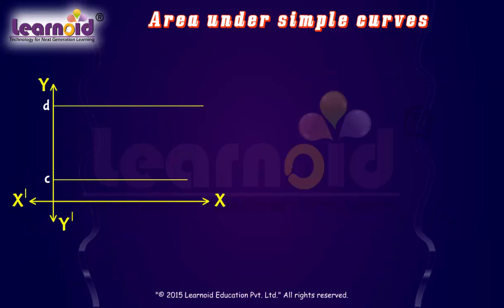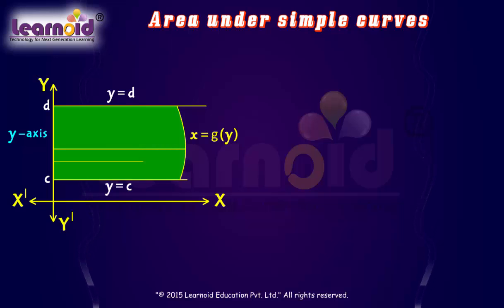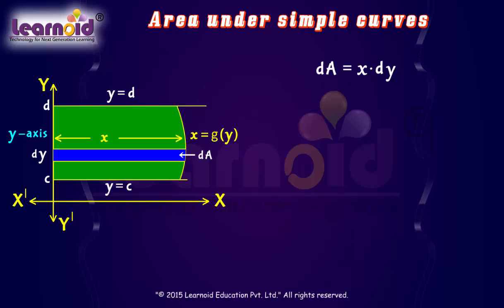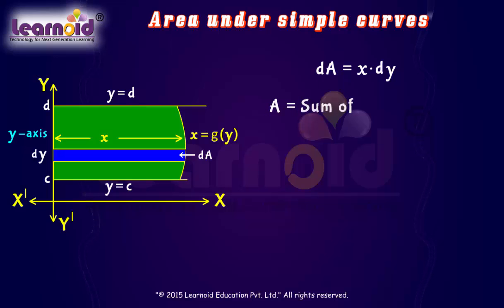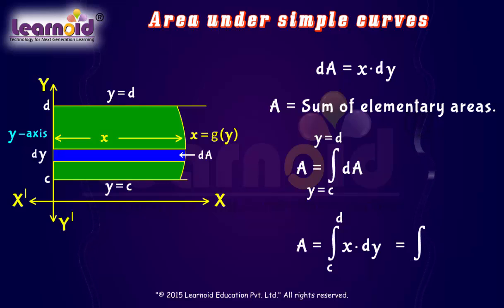Now let us apply a similar method to find the area bounded by the curve x = g(y), y = c, y = d, and the y-axis. Let us consider a small thin strip in the horizontal direction. The elementary area of the strip is x·dy. The total area of the region is given by the sum of all such elementary areas: A = definite integral of g(y)dy from y = c to y = d.